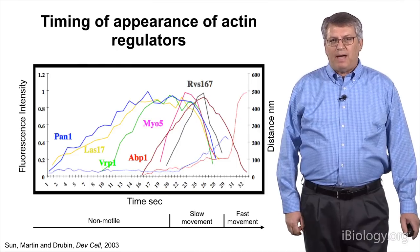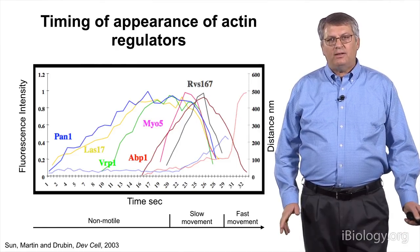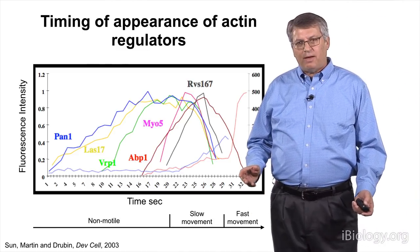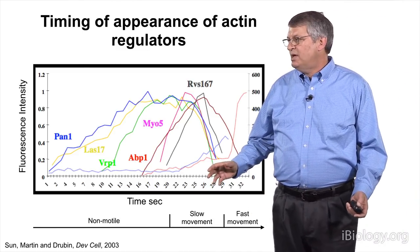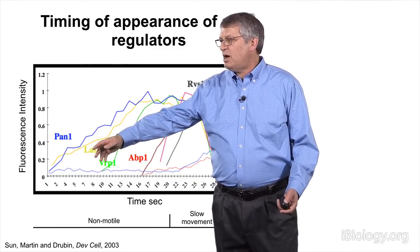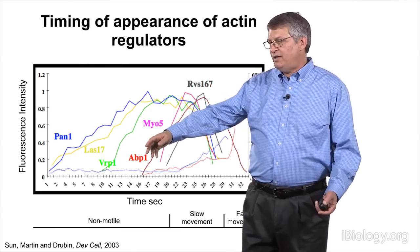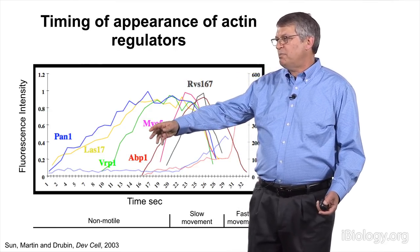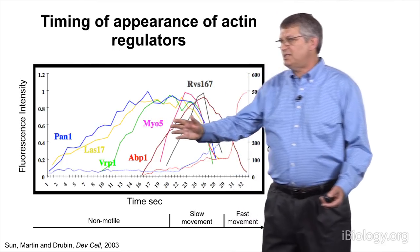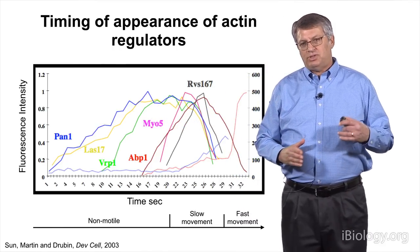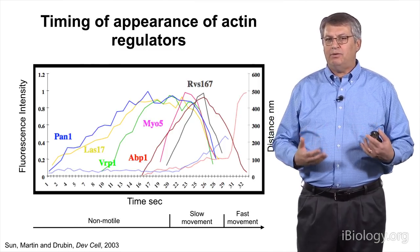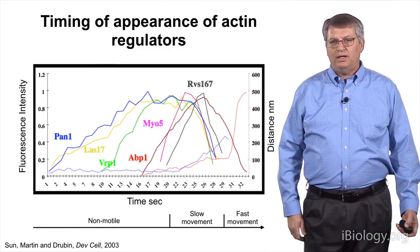Another really interesting feature of this pathway was that all these actin regulators were each recruited with distinct kinetics. Looking at the fluorescence intensity over time of different regulators — many of which are activators of the ARP2-3 complex, and here a myosin — you can see that they come with distinct kinetics at distinct times, suggesting really interesting complexity in how these different proteins are regulating actin and the functions of the endocytic machinery.